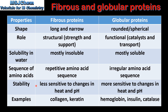Fibrous proteins are less sensitive to changes in heat and pH, globular proteins are more sensitive to changes in heat and pH. Finally, some examples: collagen and keratin are examples of fibrous proteins. Haemoglobin, insulin and catalase are examples of globular proteins.